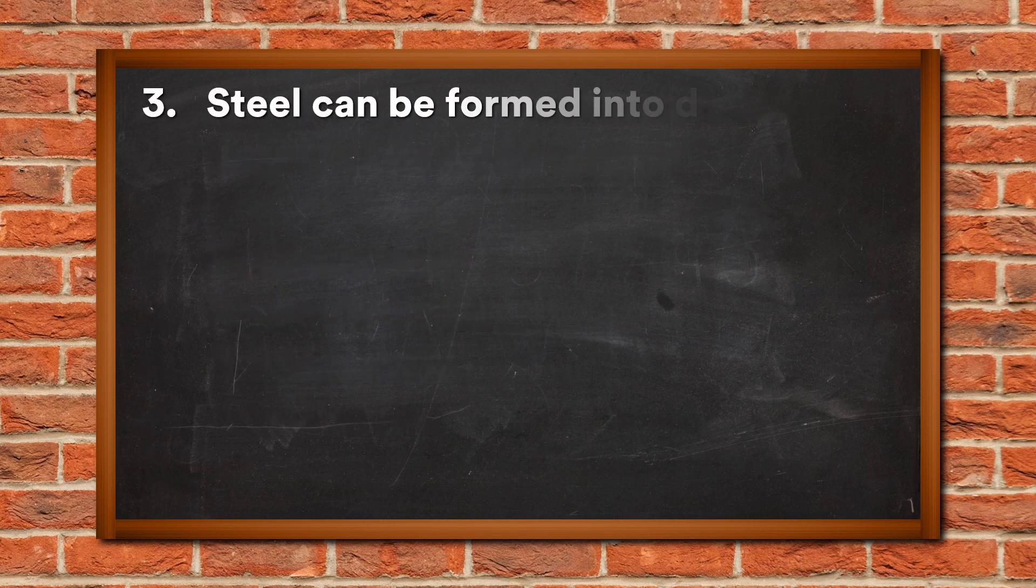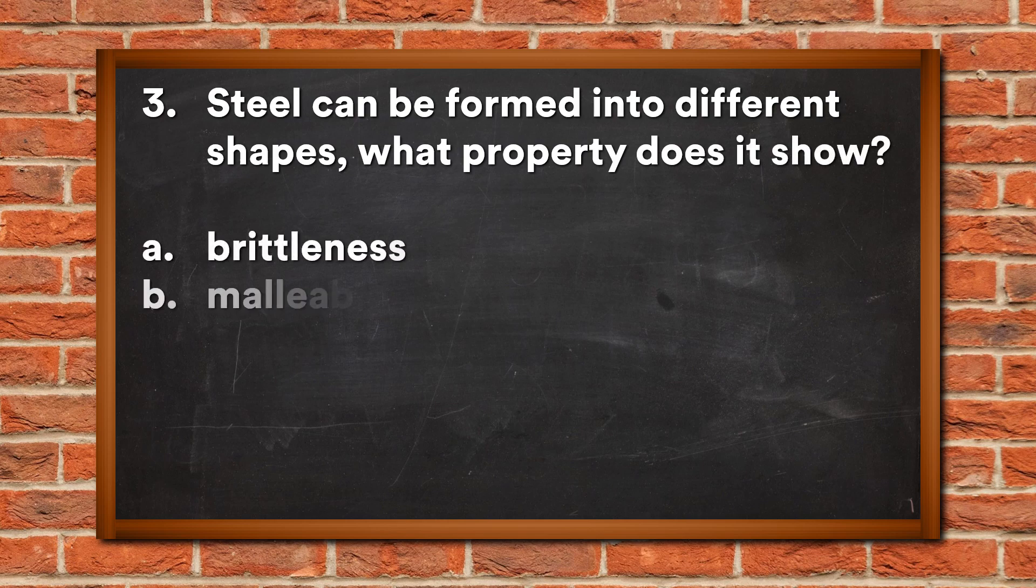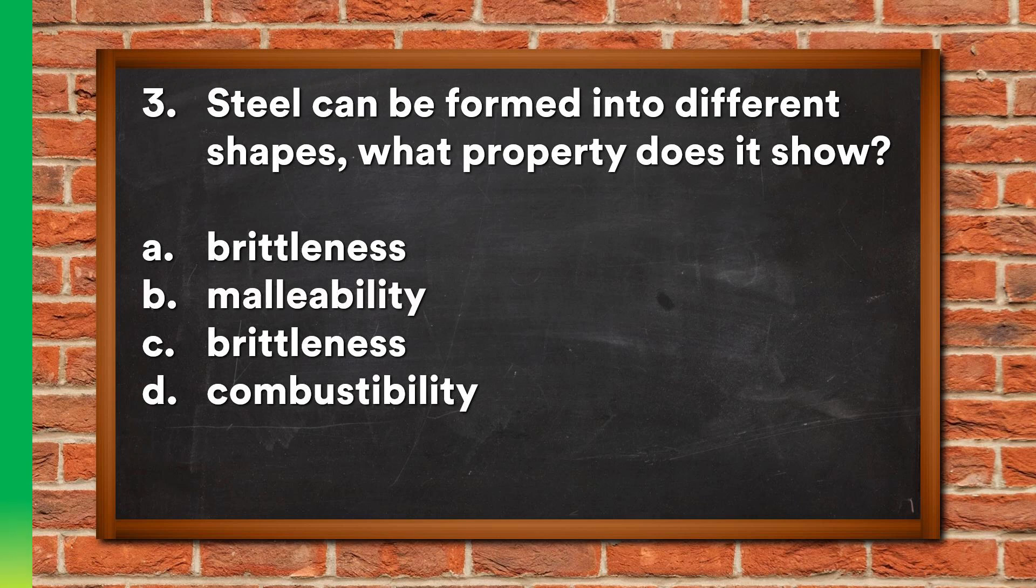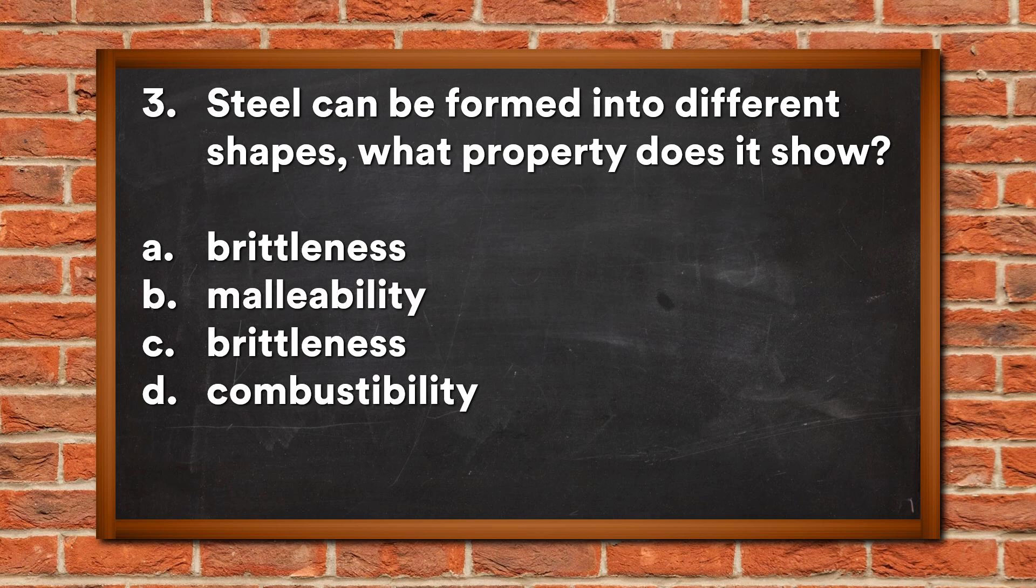Question 3: Steel can be formed into different shapes. What property does it show? A. Brittleness, B. Malleability, C. Brittleness, D. Combustibility. The answer is B, Malleability.